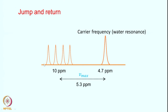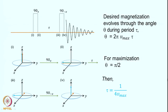We want to maximize the signal intensity of the resonances of interest and minimize the water intensity; we do not care much about signals close to the water. We want maximum intensity for the desired signals. If the frequency from the water to the signal of interest is nu_max — for example if it is 10 ppm minus 4.7 ppm, that difference is 5.3 ppm — we use a trick to get maximum intensity for those resonances.